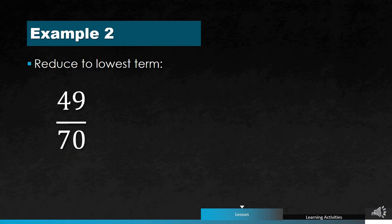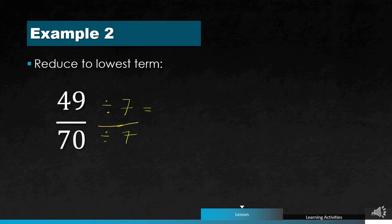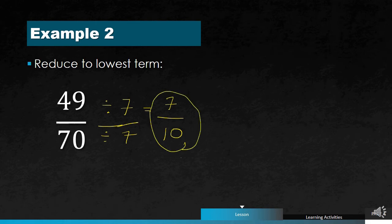Let's have another example: 49 over 70. We consider the GCF — the common factor between 49 and 70 is 7. So we divide both by 7: 49 divided by 7 gives 7, and 70 divided by 7 gives 10. The common factor between 7 and 10 is now only 1, meaning they are both prime numbers. Therefore, 7 over 10 is the lowest term or simplest form of 49 over 70.